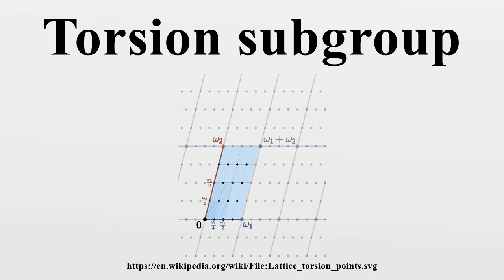The proof that T is closed under addition relies on the commutativity of addition. If A is abelian, then the torsion subgroup T is a fully characteristic subgroup of A, and the factor group A/T is torsion-free.